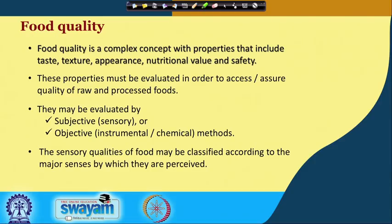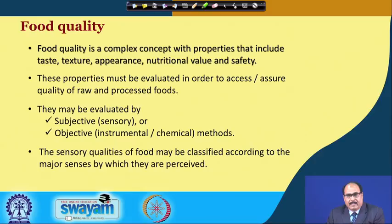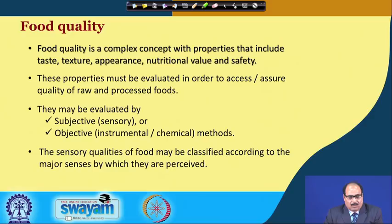Food quality is a very complex concept. It includes properties like taste, texture, appearance, nutritional value and safety. These properties must be evaluated in order to assess or assure the quality of raw and processed foods. These quality attributes may be evaluated by subjective or sensory methods, or objective methods like instrumental or chemical methods.